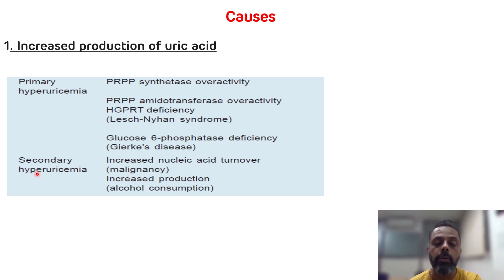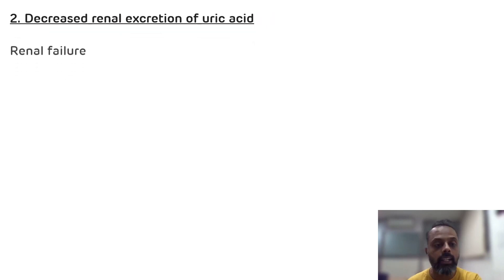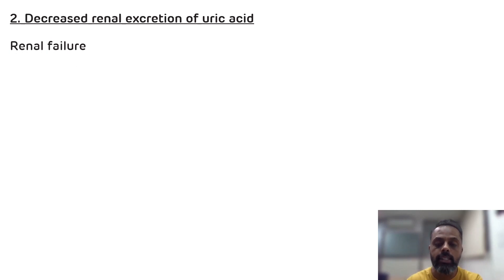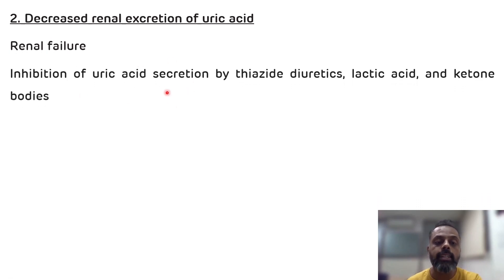Now causes for secondary hyperuricemia are malignancy, which leads to increased nucleic acid turnover, and alcohol consumption, which leads to increased production of uric acid. Now causes for decreased uric acid excretion are renal failure and inhibition of uric acid secretion by thiazide diuretics, lactic acid, and ketone bodies. That is related to the etiology of gout.